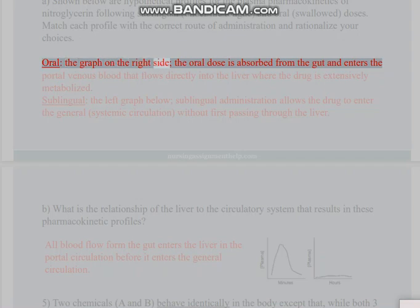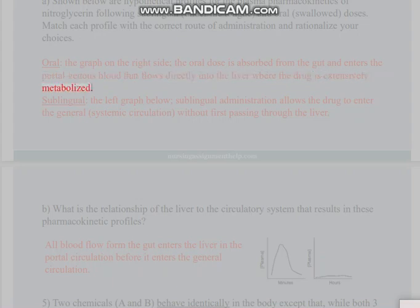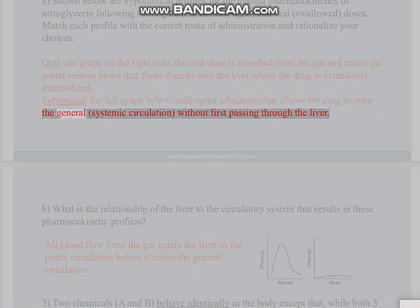Oral, the graph on the right side: the oral dose is absorbed from the gut and enters the portal venous blood that flows directly into the liver where the drug is extensively metabolized. Sublingual, the left graph: sublingual administration allows the drug to enter the general systemic circulation without first passing through the liver.